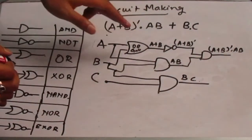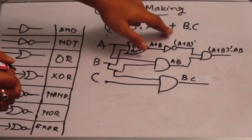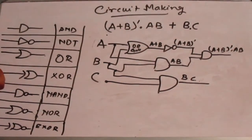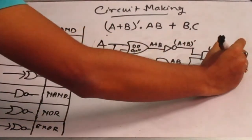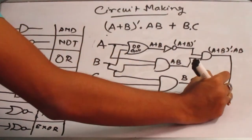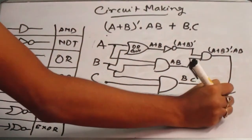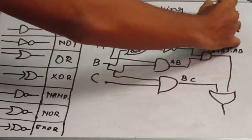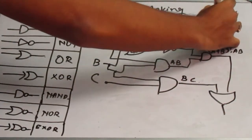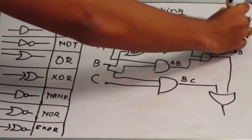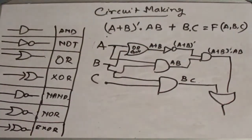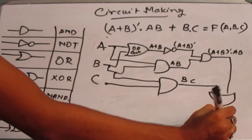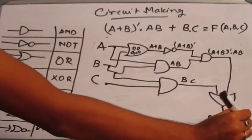And then it will be combined with the plus operator, that means with the OR operator. So we have to pass this expression through an OR gate. We are calling this expression F of A, B, C. So this will give F of A, B, C.